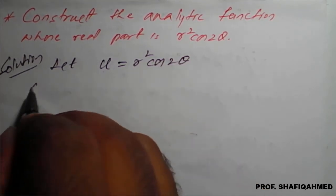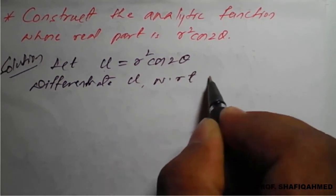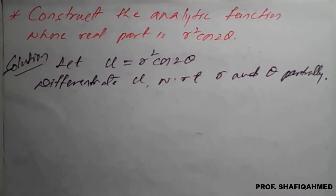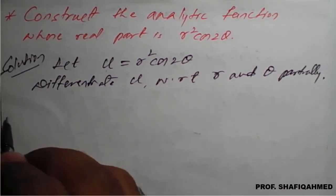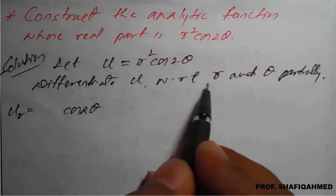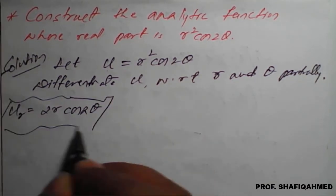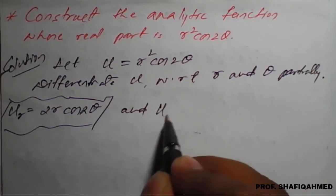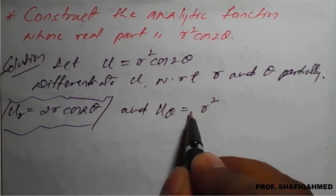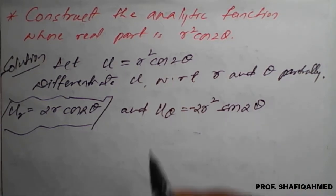We need to differentiate u with respect to r and θ partially. Differentiating u with respect to r: cos(2θ) is a constant, so the differentiation of r² with respect to r gives u_r = 2r cos(2θ). Similarly, differentiating u with respect to θ: r² is a constant, so differentiation of cos(2θ) gives u_θ = −r² · 2 sin(2θ), which is −2r² sin(2θ). We have to be careful here.